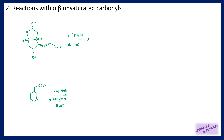Then we will take the next reaction: reaction with alpha-beta unsaturated carbonyls. Organolithium compounds are harder nucleophiles — remember this. They are hard nucleophiles, and if they are hard nucleophiles they will attack on the hard electrophilic center. In the case of alpha-beta unsaturated carbonyl we have this situation, so our nucleophile can attack on this carbon or it can attack on this one.